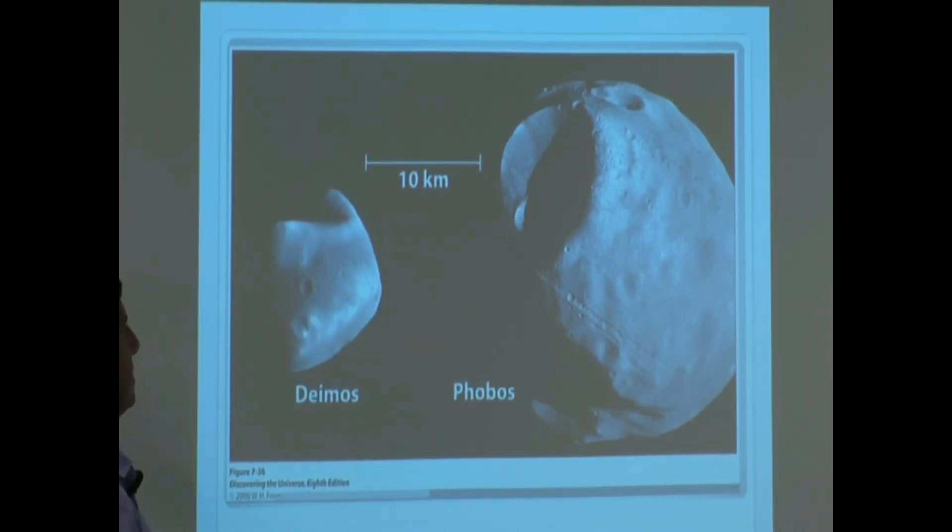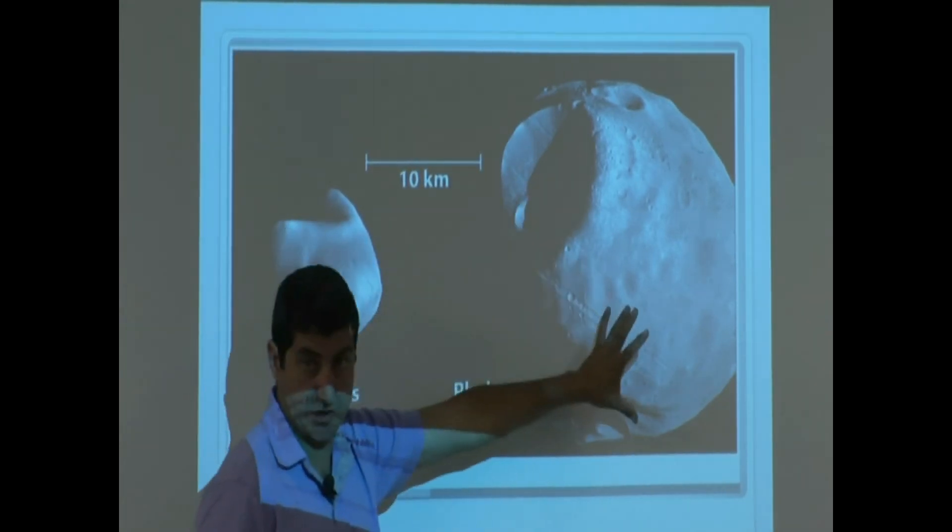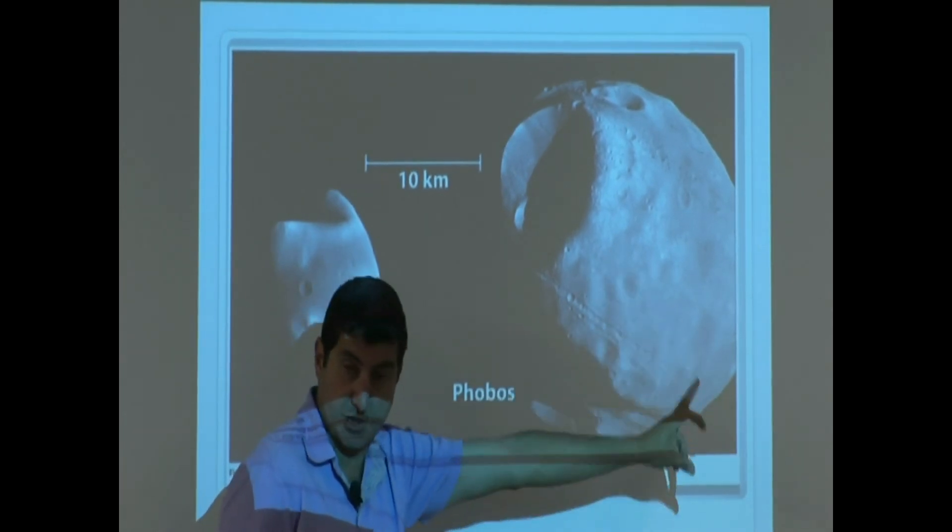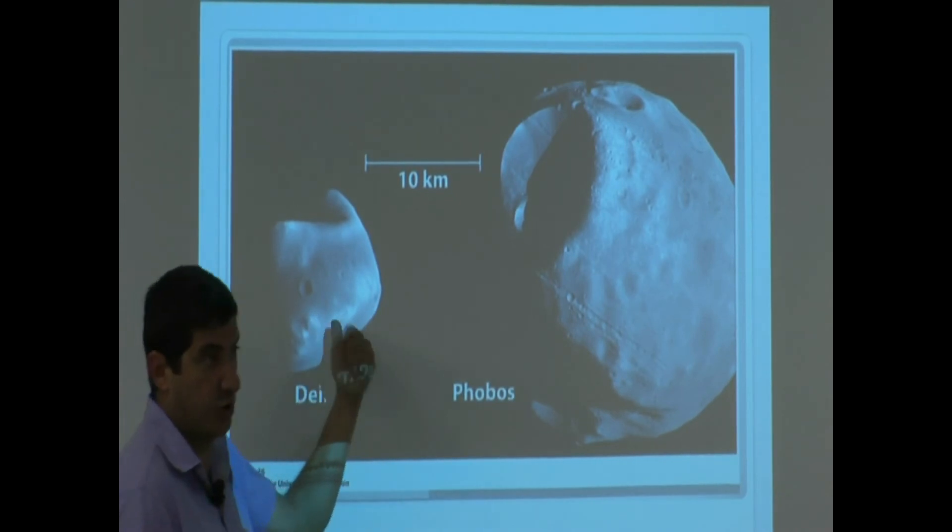It's farther away from Mars. And it's smaller than even Phobos. So Phobos is the closer one to Mars, and Deimos is the smaller one. It's one of the smallest moons in the solar system.